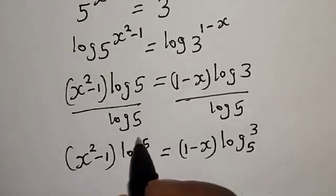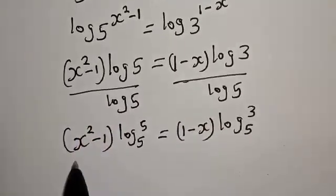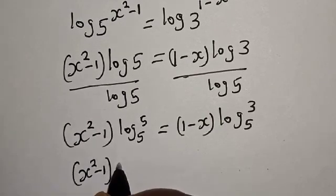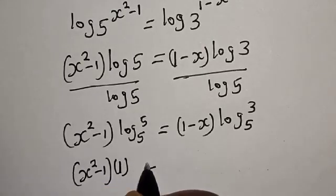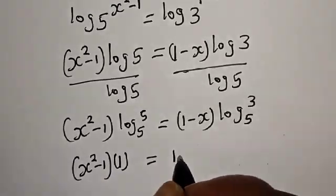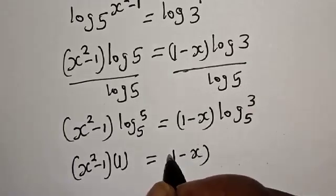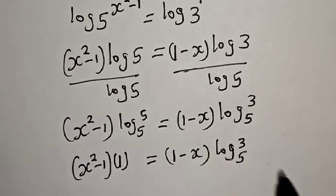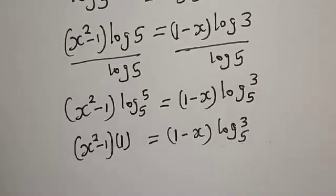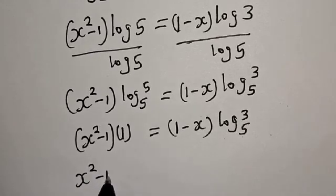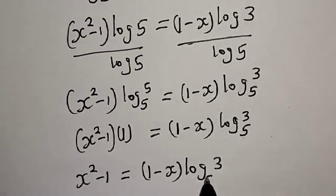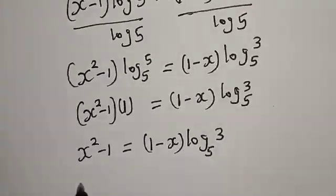But log 5 base 5 is 1. So we have s squared minus 1 multiplied by 1 is equal to 1 minus s times log 3 base 5. Then this is s squared minus 1 is equal to 1 minus s times log 3 base 5. Now let's bring this to this side.